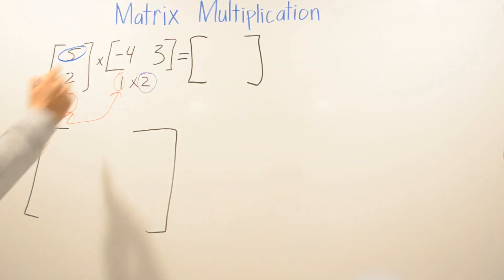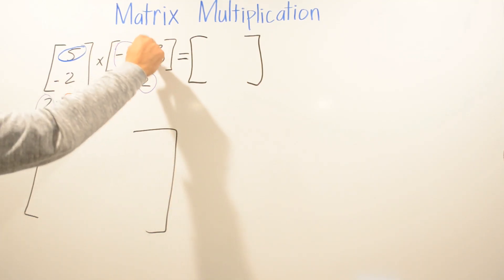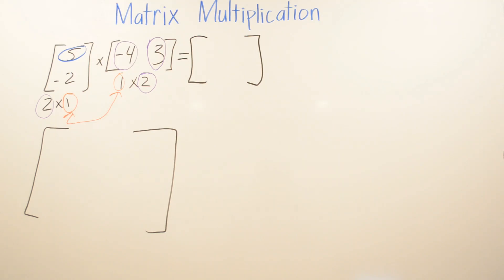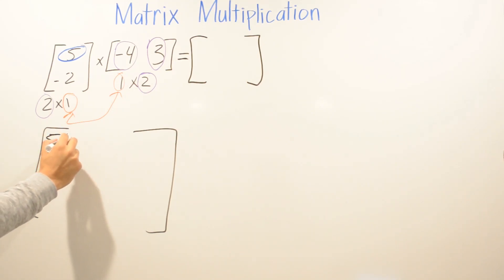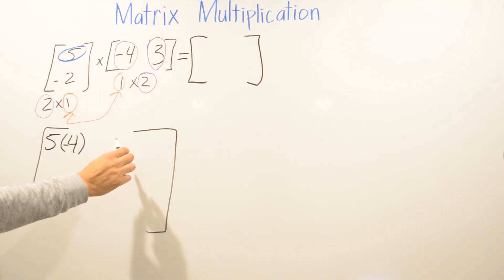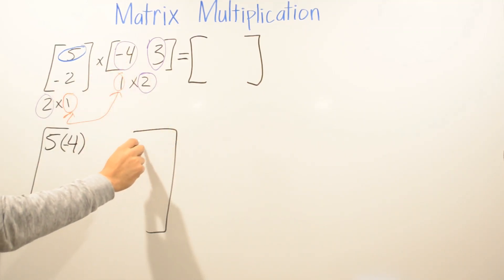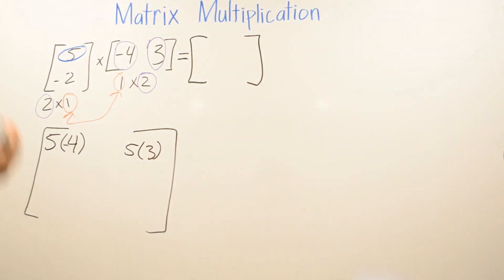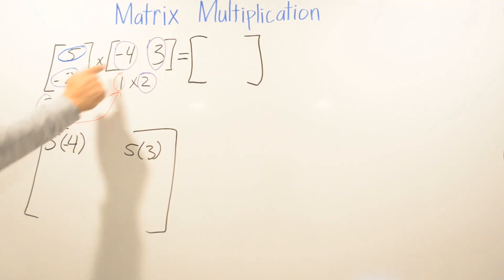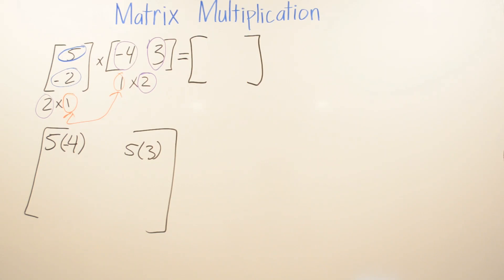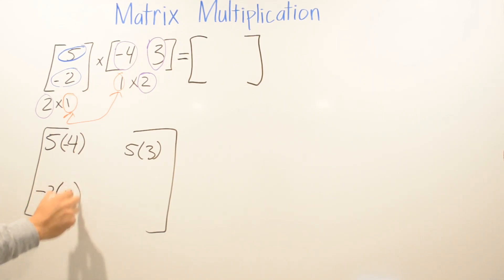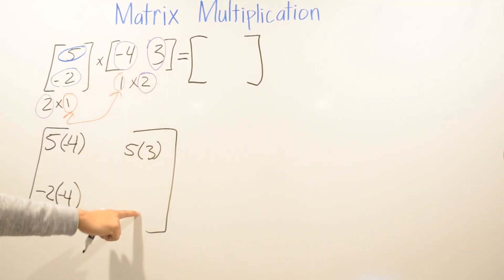We go ahead and start multiplying. We multiply 5 times negative 4, and on the other corner we multiply 5 times 3. Then we multiply negative 2 times negative 4 for the next corner, and negative 2 times 3 to get the last corner of the matrix.